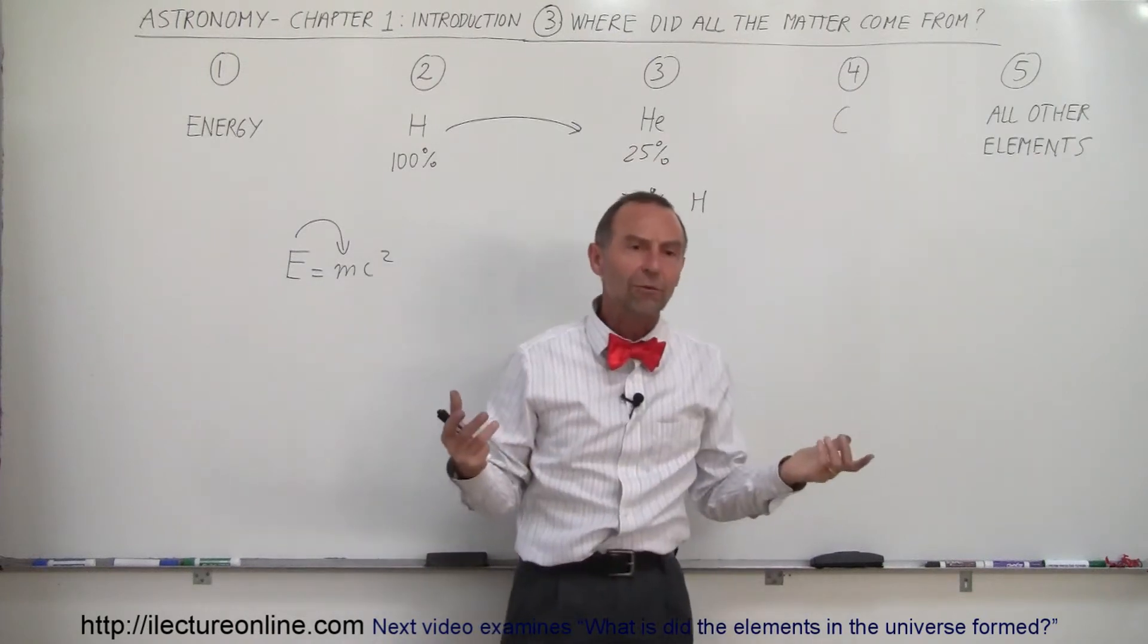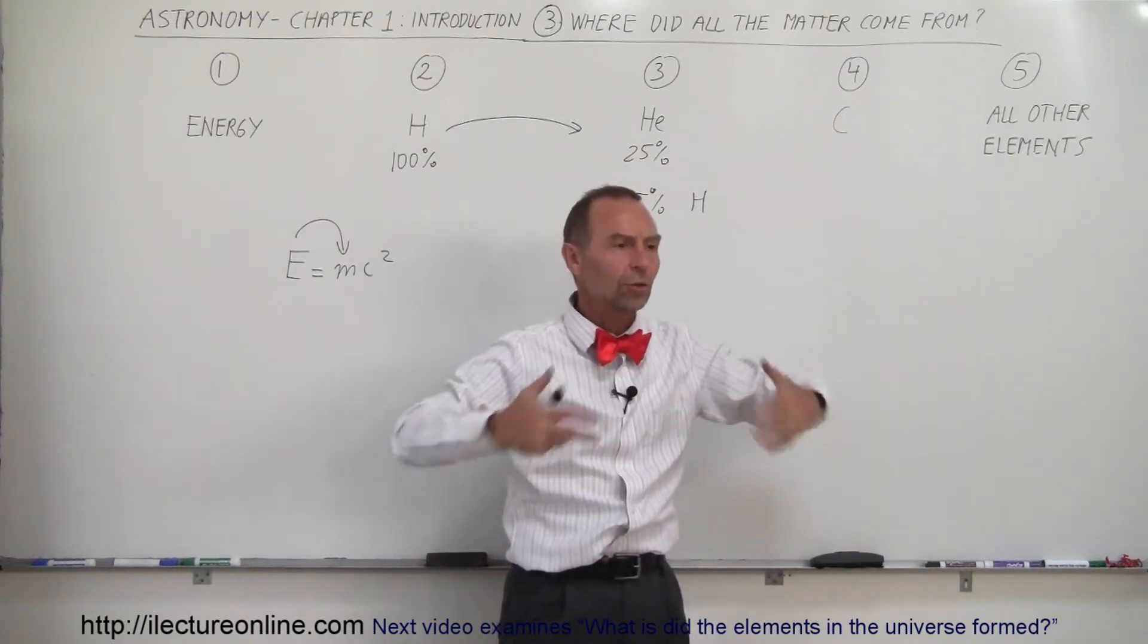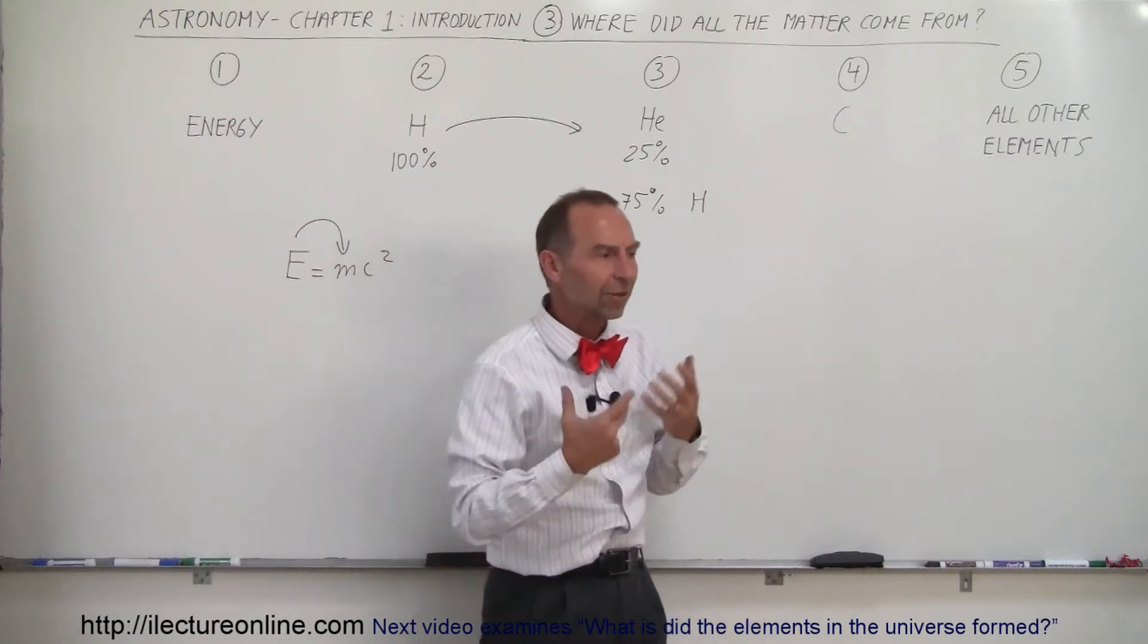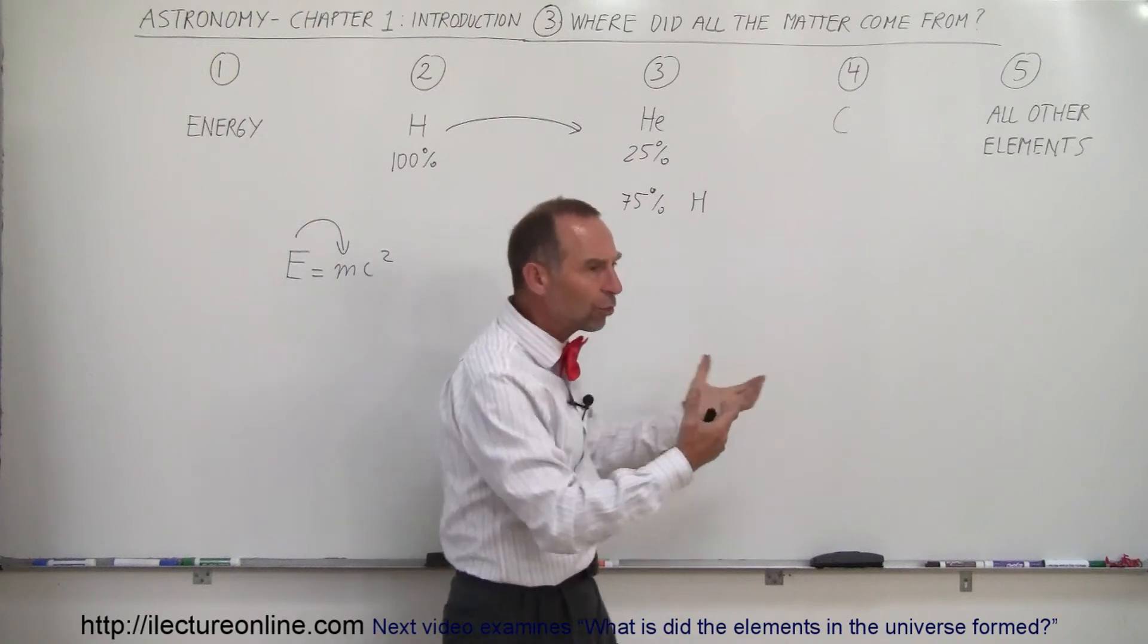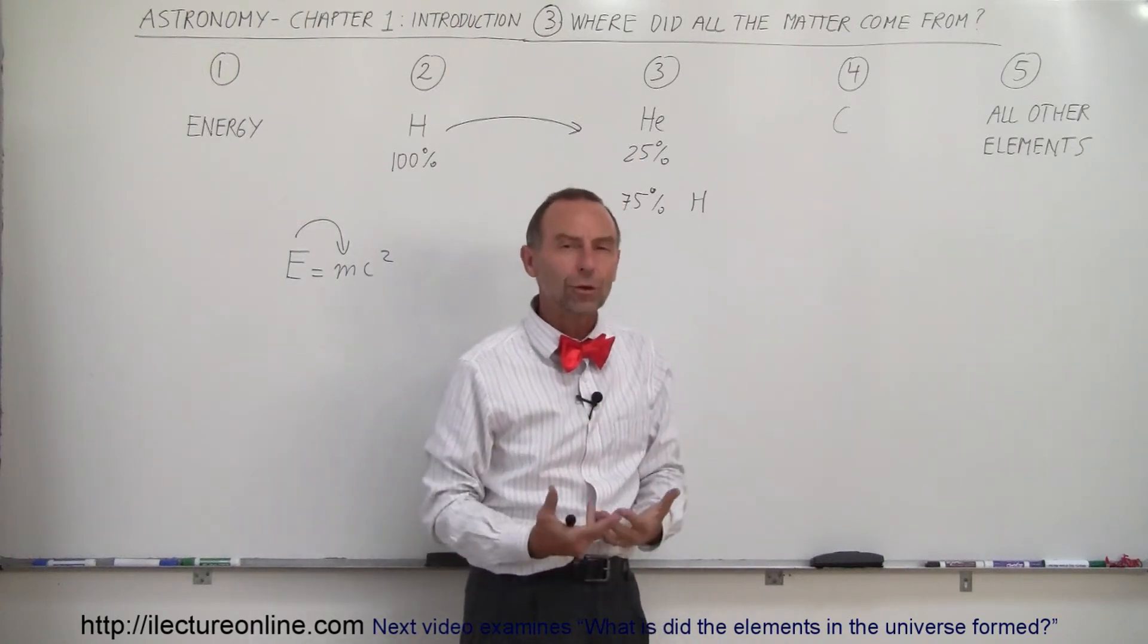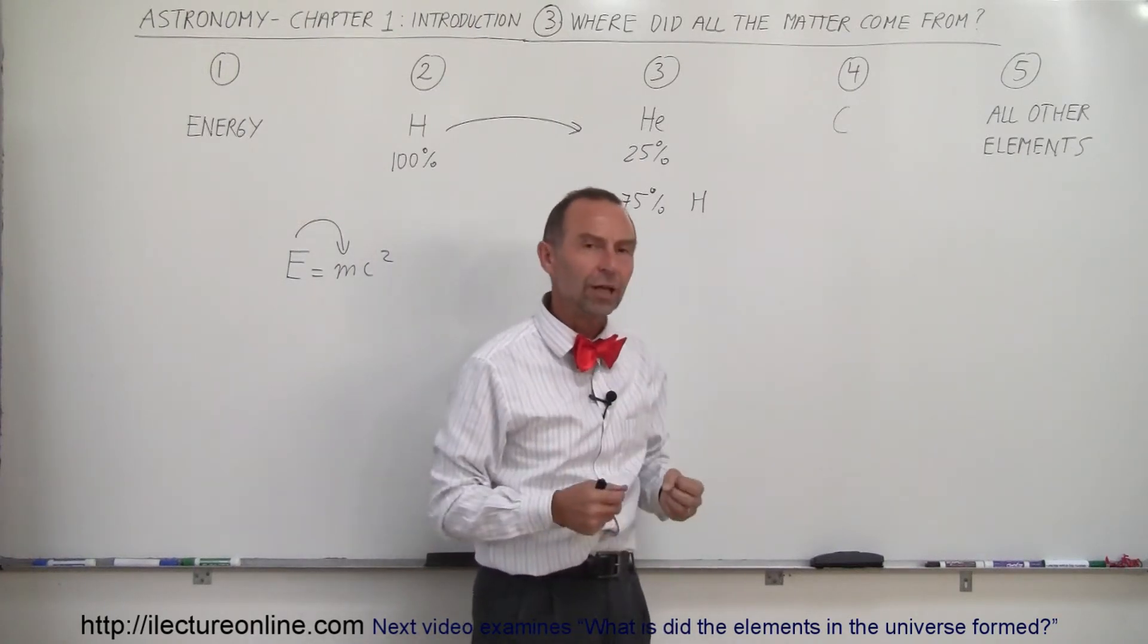But what about all the other stuff? What about the stuff that makes up the Earth? All the rock and the metal and everything that's existing in the Earth. Where did that come from? And how did we get it from the stars to where we are today? How did the planet Earth come about with all this material on it?